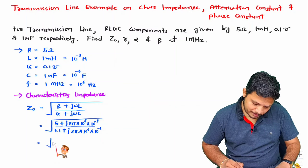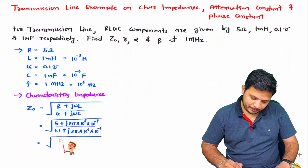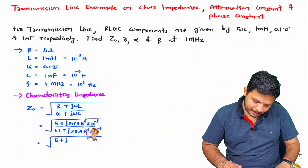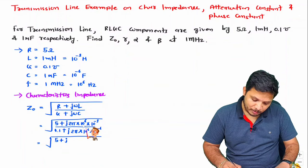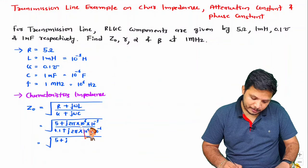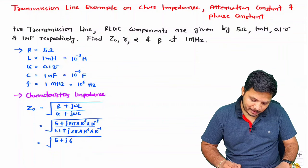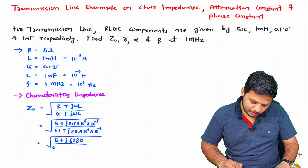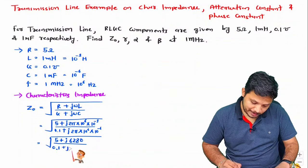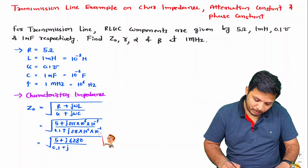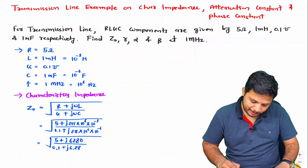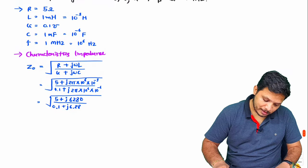Simplifying: the numerator becomes 5 + j·(2π × 10^3) = 5 + j·6280, since 2 × 3.14 × 10^3 = 6280. The denominator becomes 0.1 + j·(2π), since 10^6 × 10^-6 cancels, giving 0.1 + j·6.28. One should know how to use the calculator for these complex expressions.